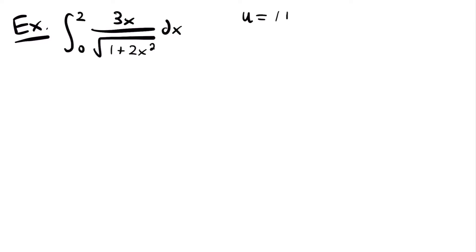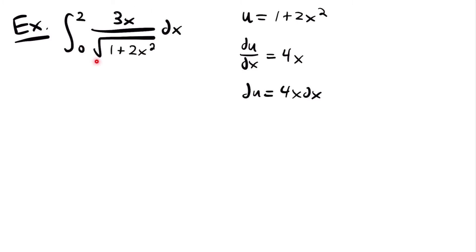Taking the derivative: du/dx equals 0 plus 4x, so du equals 4x dx. Looking at our integral, instead of 4x dx we see 3x dx — not a perfect match, but that's okay as long as the degree of x is the same, which it is (both x to the first power). We just divide both sides by 4: du divided by 4 equals x dx. So we can replace x dx with du divided by 4.